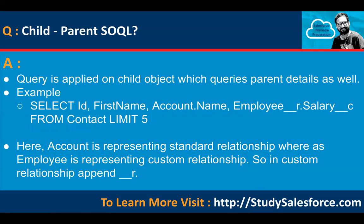Next is child-to-parent SOQL. In this query, it is applied on the child object and also queries parent details. For example: SELECT Id, FirstName, Account.Name, Employee__r.Salary__c FROM Contact. Here Account represents a standard relationship, while Employee__r represents a custom relationship. For custom relationships, append __r to the relationship name, and custom fields use __c.